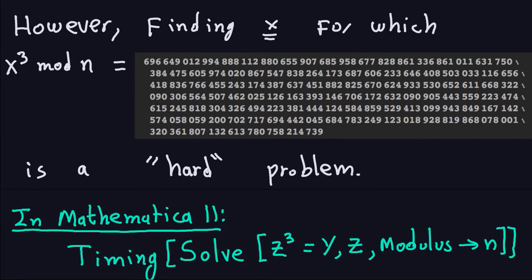Hello and welcome again. In the previous video we talked about how it was a hard problem to invert this function. Basically what we had was a function with a cube an element and then take modulo some product of two primes. The way we show that it's a hard problem is by putting this in Mathematica and showing that it took a long time to do it.